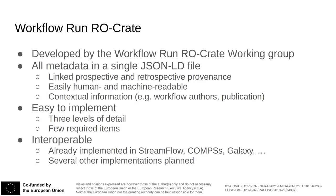What I am going to present here is an alternate method to capture the provenance of workflow executions called Workflow-Run-RO-Crate, which is being developed by a working group that I am co-chairing. In this format, all metadata is concentrated into a single file, which links together the prospective and the retrospective provenance. Being based on the schema.org vocabulary, it is expressive enough to represent additional contextual information, such as workflow authors or related publications. It's flexible, allowing it to adapt to a broad range of use cases, and it's not engine-specific, which makes it interoperable. In fact, it's already supported by several popular workflow engines.